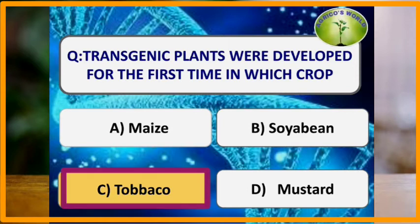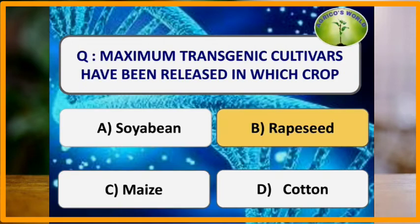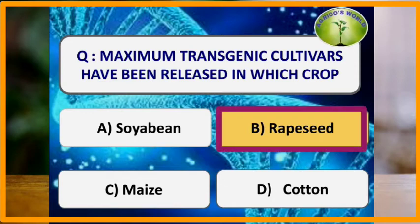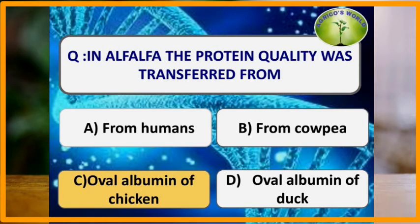Transgenic plants were first developed in the crop tobacco in the year 1983. The maximum number of transgenic cultivars have been released in the crop rapeseed, that is 290, followed by potato, tobacco, tomato, and maize.